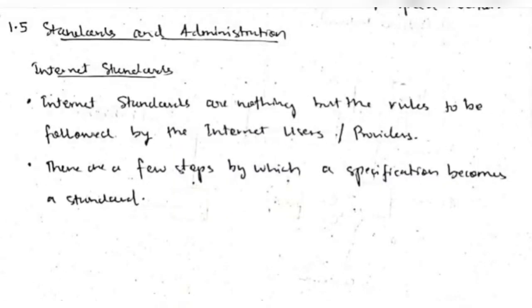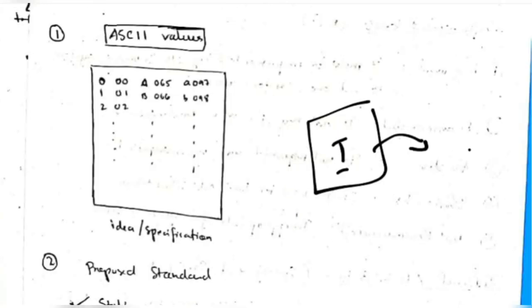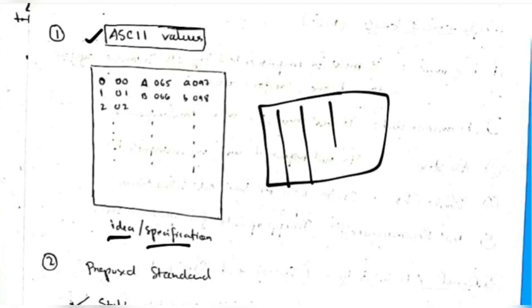Internet standards are the rules to be followed by internet users and providers. There are a few steps by which a specification becomes a standard. An internet standard is a new idea to be implemented in the internet user community to help users and society. For example, ASCII values were added to the internet community to make storing and transferring data more efficient.